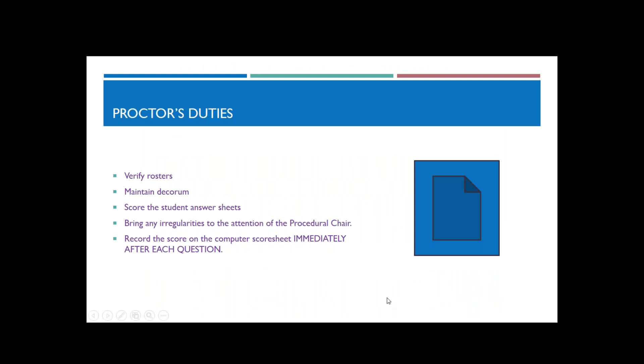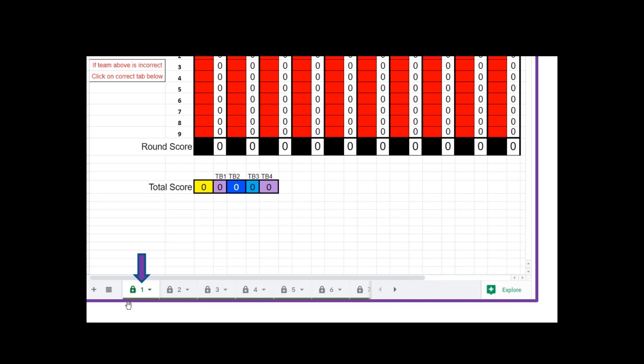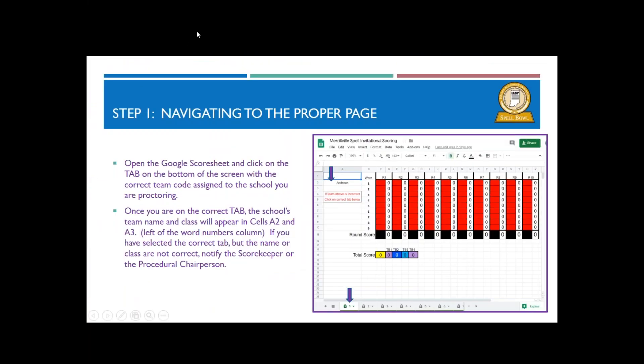Let's move on to the electronic scoring itself. This can be a little bit intimidating when you look at the scoresheet, but it's really a simple procedure for you. You will open the Google scoresheet that will be on the electronic device at your table. You need to click on the tab on the bottom of the screen with the correct team code assigned to the school you're proctoring. If you'll notice here on the bottom of the screen, you have a series of tabs along the bottom. Right now this scoresheet shows that they're locked, but they'll be unlocked for you. You find the team number that you have been given.